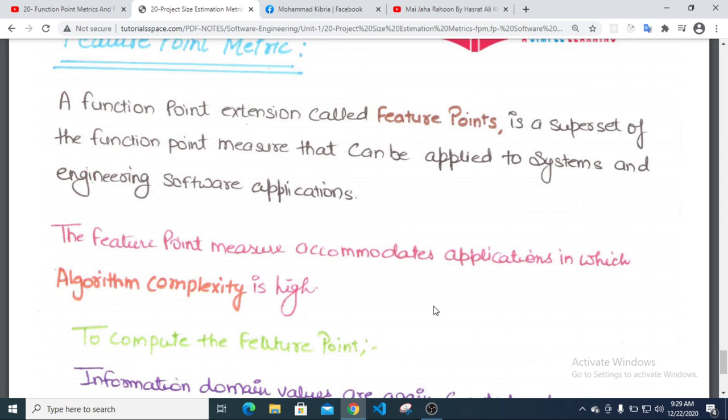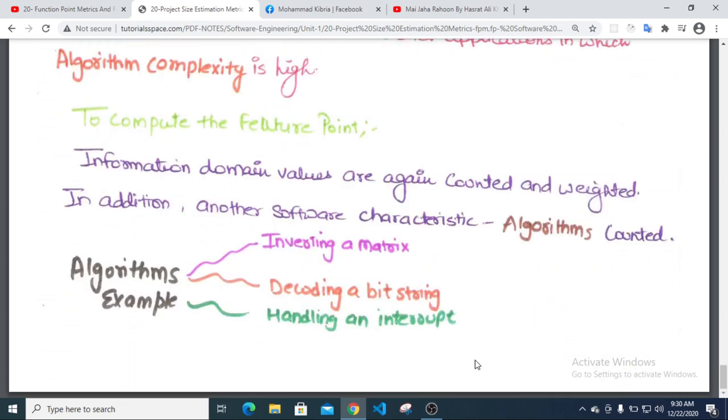The feature point metrics replace the number of files in function point metrics with the number of algorithms.